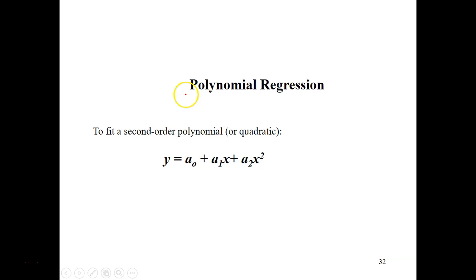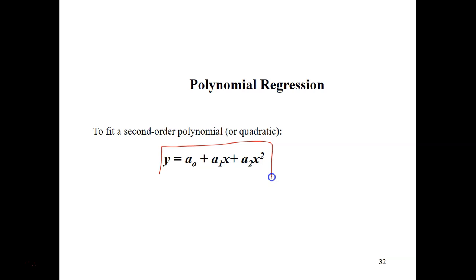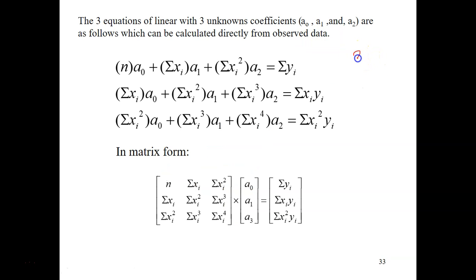The last segment covers polynomial regression. We are trying to fit a second-order polynomial — a quadratic equation. We want to find the coefficients A0, A1, and A2 given a set of data x and y.